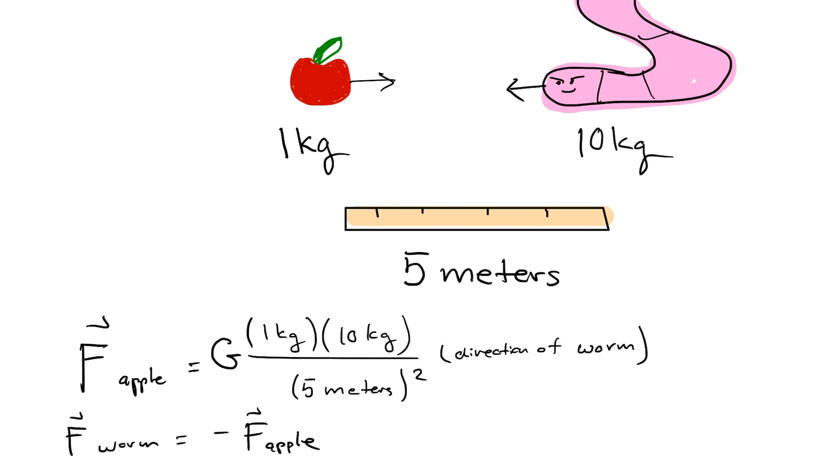An interesting consequence of this formula is that two objects pull each other with the same force but in opposite directions, hence the minus sign of the force on the apple.